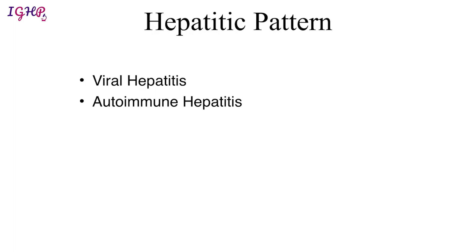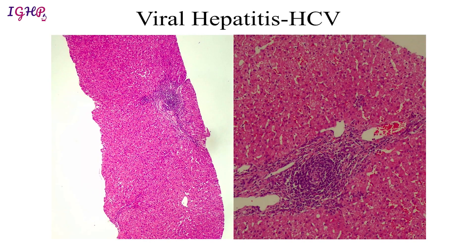The hepatitic pattern includes primarily viral hepatitis and autoimmune hepatitis. Viral hepatitis can be caused by a number of hepatotropic viruses like hepatitis A, hepatitis B, hepatitis C, delta virus, and hepatitis E virus. Autoimmune hepatitis is caused by the formation of antibodies within the system.